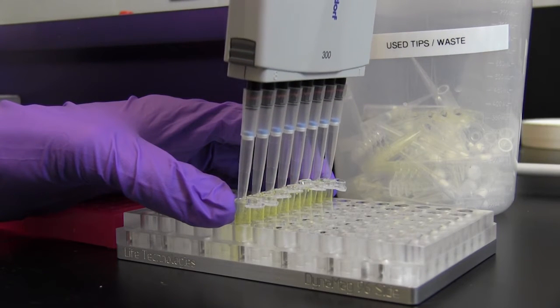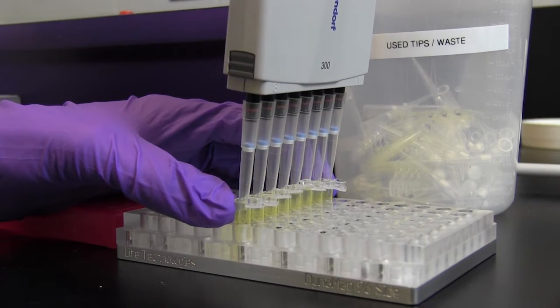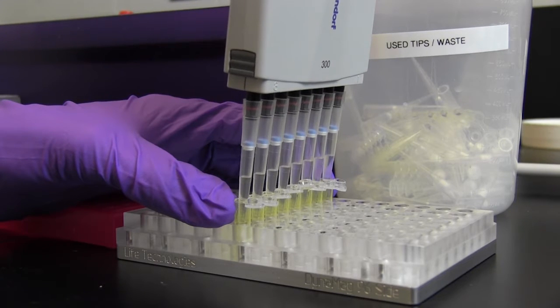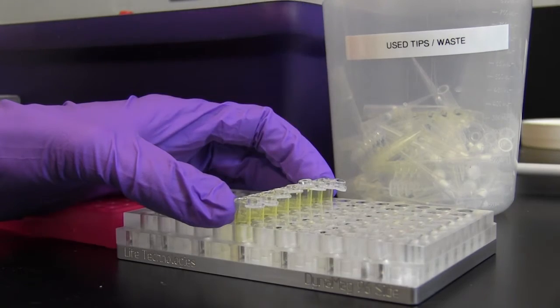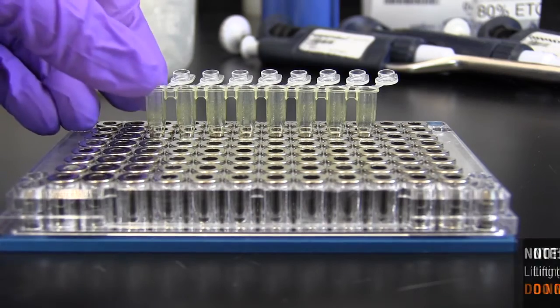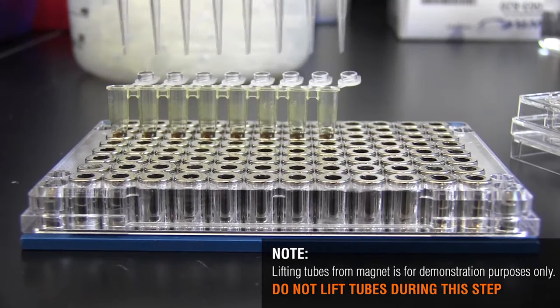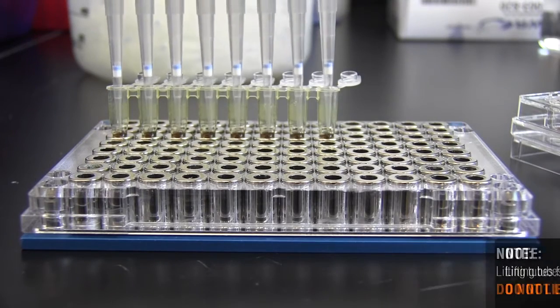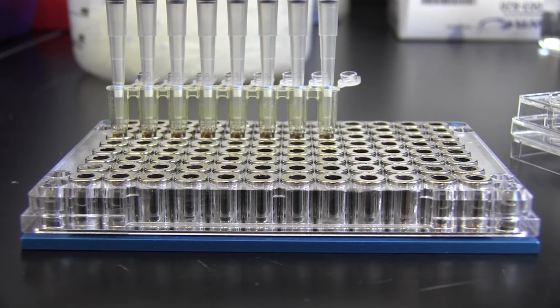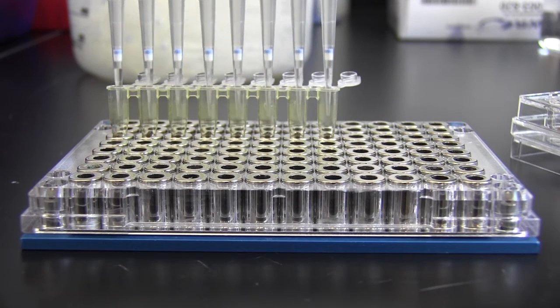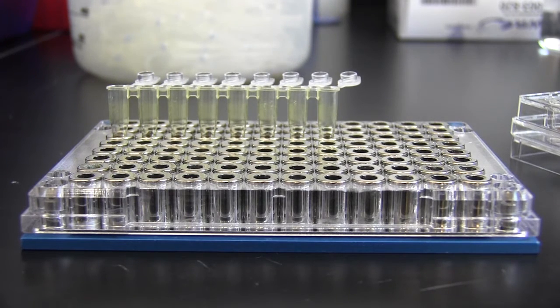Vertical bar magnets pull the beads to one side of the tube or well and the supernatant can be removed by placing the pipette tip on the opposite side of the tube or well from the magnet. Plates with circular magnets pull the beads uniformly to the walls of the tube or well so the supernatant can be removed by pipetting straight down into the bottom of the tube or well, being careful not to touch the sides.